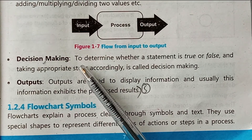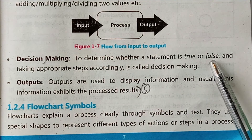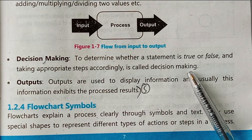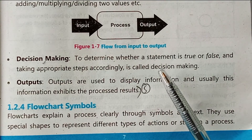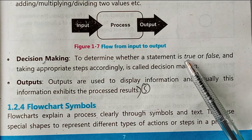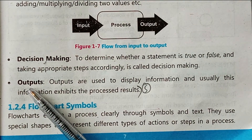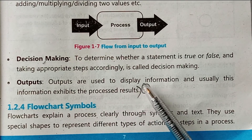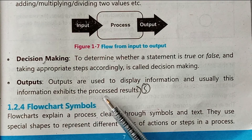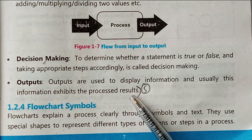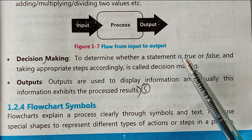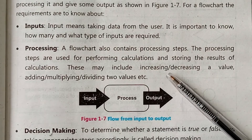Third one is decision making. To determine whether a statement is true or false and taking appropriate steps accordingly is called decision making. Fourth one is outputs. Outputs are used to display information, and usually this information exhibits the processed results.